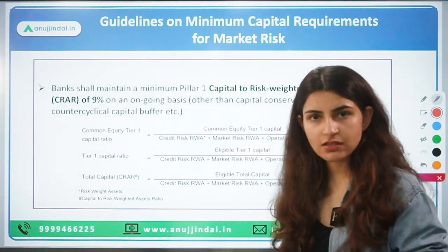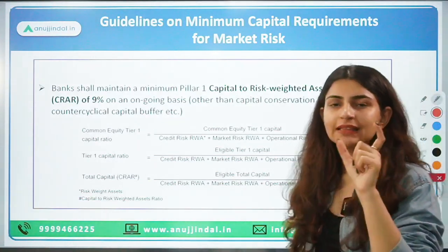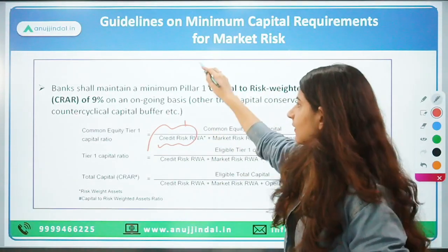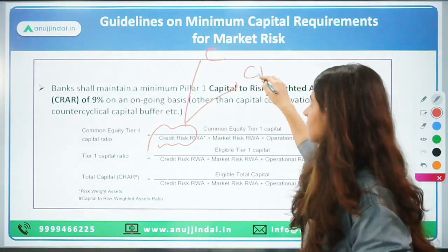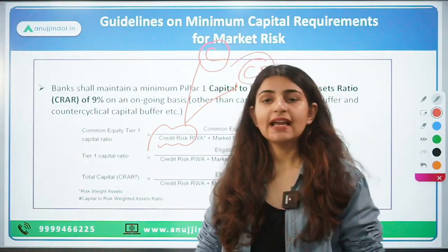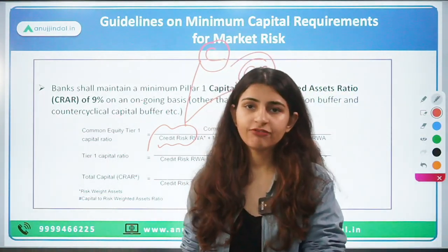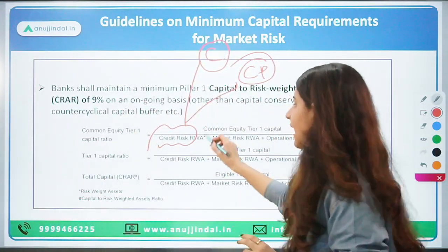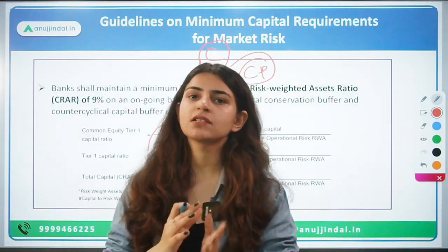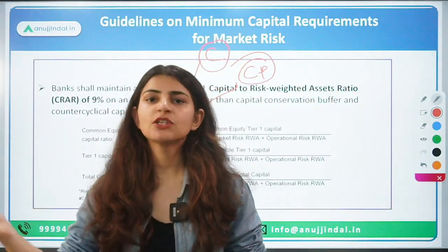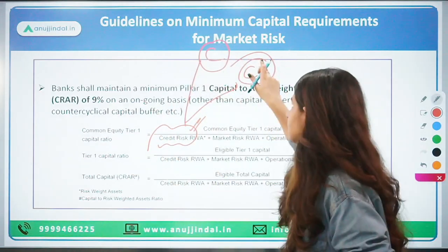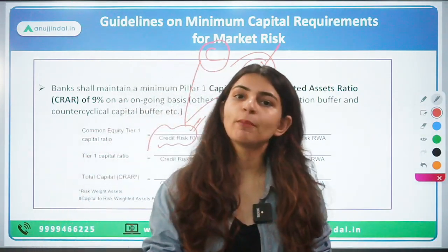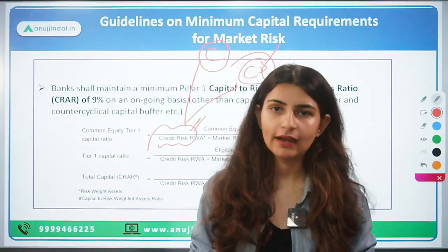In Pillar 2, three types of risks were talked about. The first is credit risk, which involves country risk and counterparty risk. What is counterparty risk? If whoever has taken the loan does not pay back the loan, that is credit risk. If somebody who has to repay the loan defaults — or fails to meet any obligation where a person is supposed to pay the bank and they do not — that is credit risk.